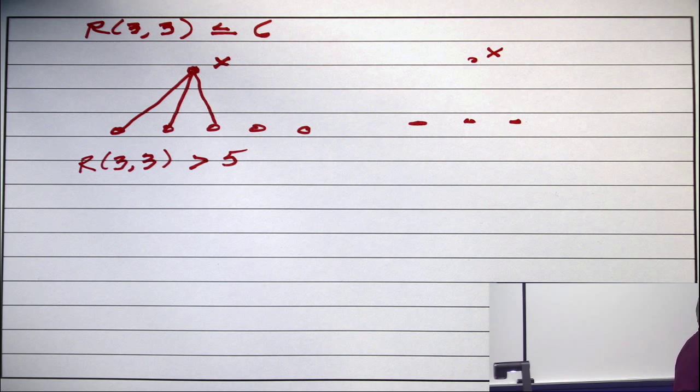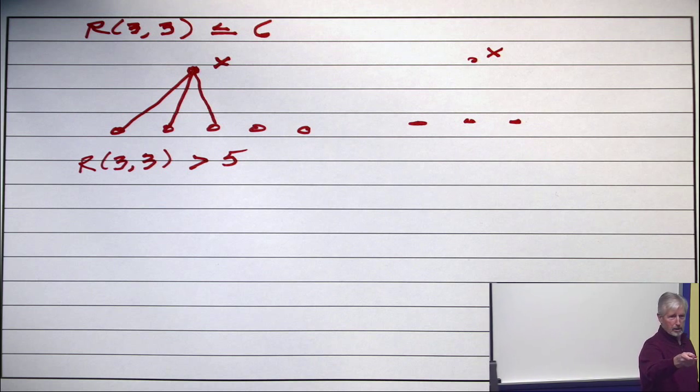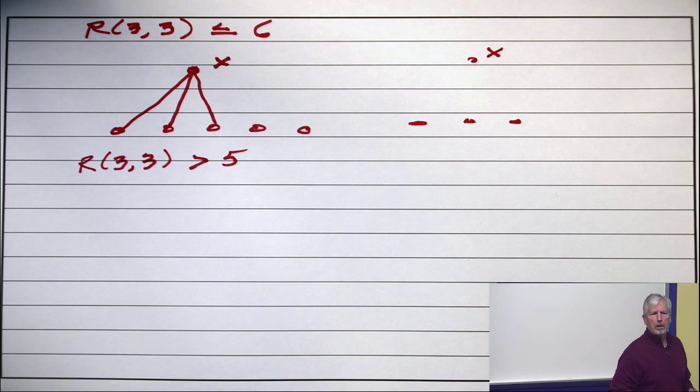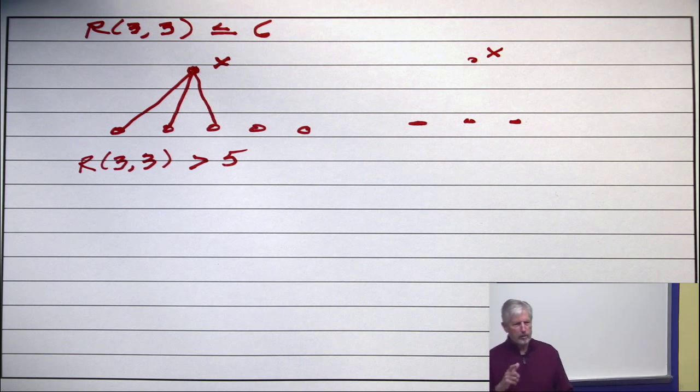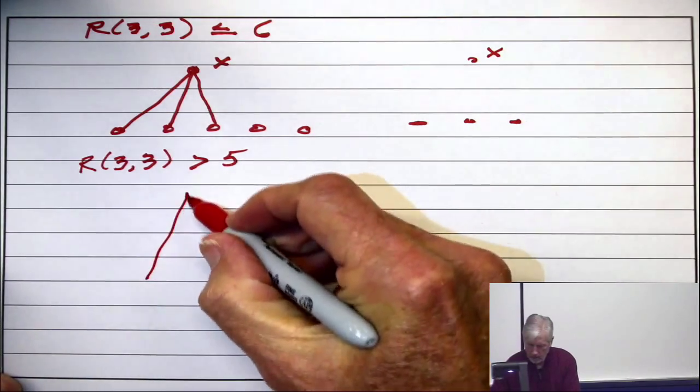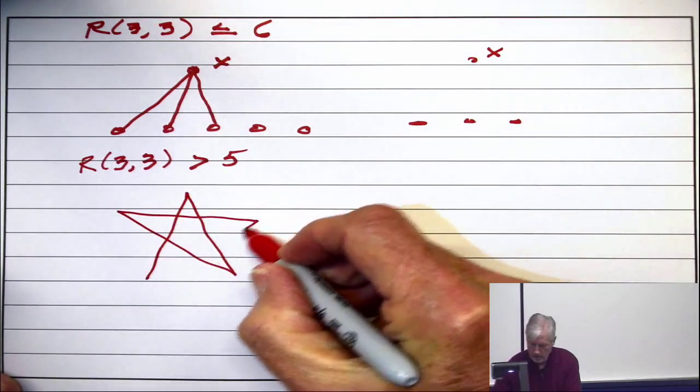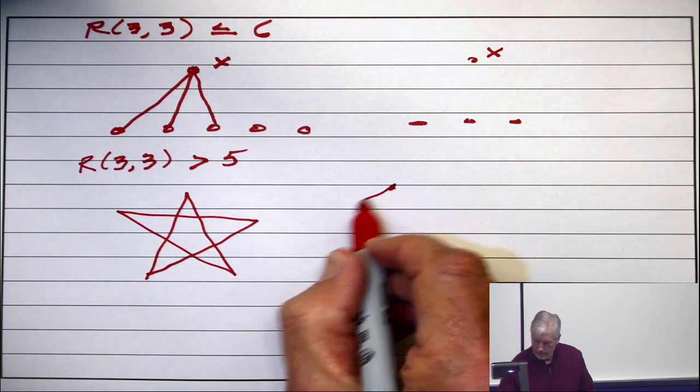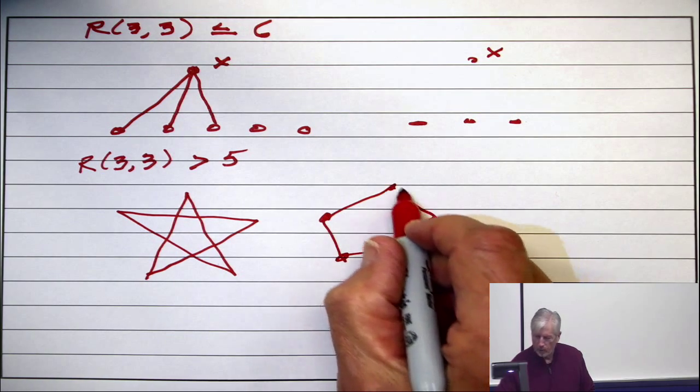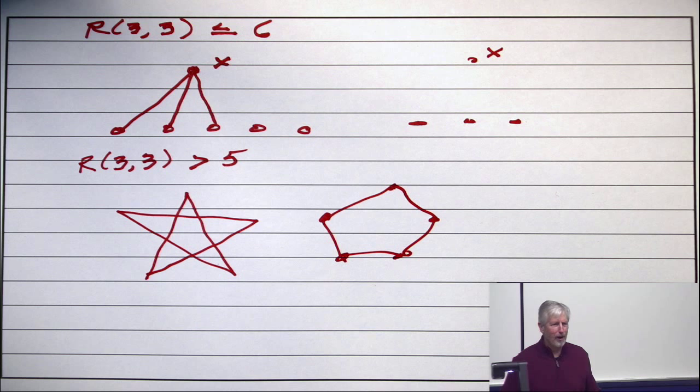Anybody got an answer? What do you say? A star? A star. I think you meant this kind of star. Actually, I could draw that a different way. Which is a little bit more obvious about what it is. It's just a C5.